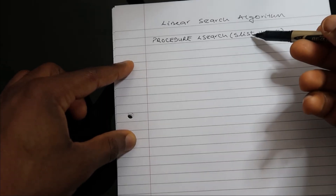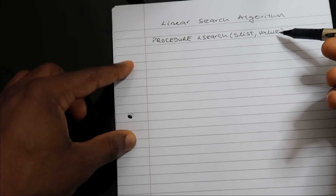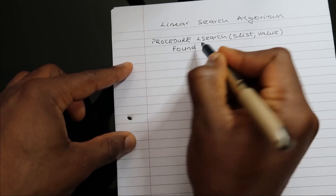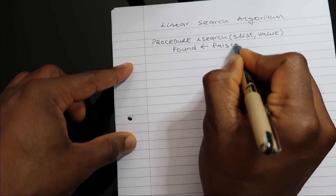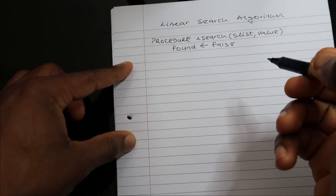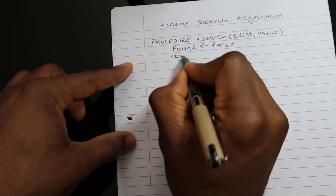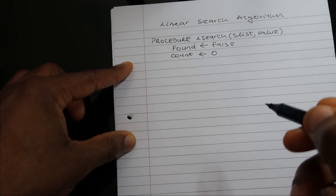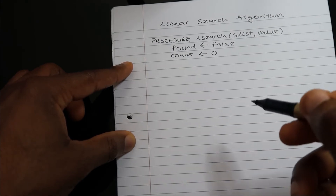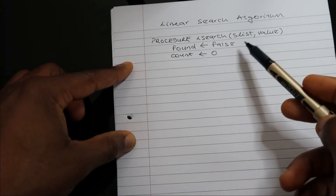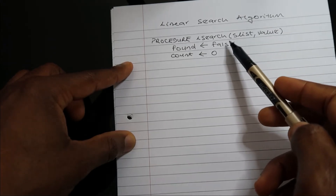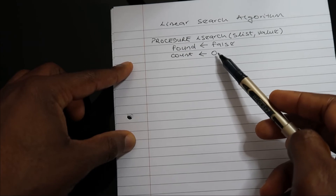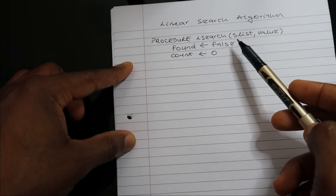So the list holds the data I'm going to search through, and the value is what I'm looking for. Next, I'll create a boolean variable called 'found' and declare it as false. After that, I'll create a counter variable called 'count' and assign it zero. We want to keep searching the list until we've found the value — so 'found' becomes true — or there are no more items left, meaning count equals the length of the list.